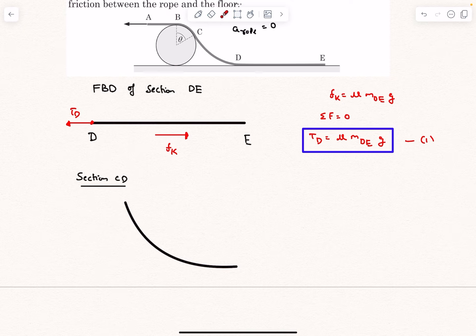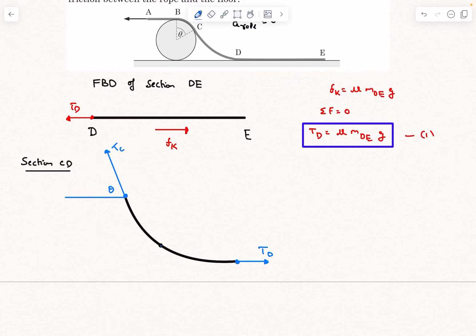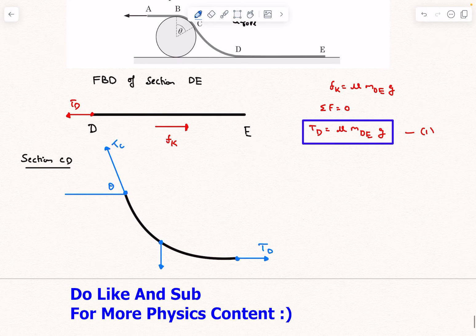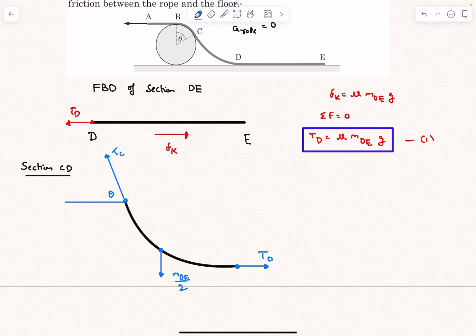Now let's draw the FBD of the section CD. At end D we determine the tension to be T_D. Now at end C let's just assume it is T_C. The T_C is actually tangential to the cylinder at this particular point, and the tangent would make an angle theta with the horizontal. So we can say this angle over here is theta. Now this will also have some weight of its own, and it is given to us that the weight is actually half of the weight of the end DE. So we can actually write this as M_DE by 2 times G.